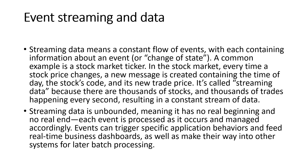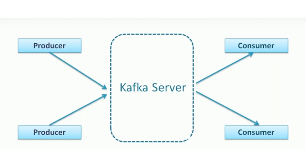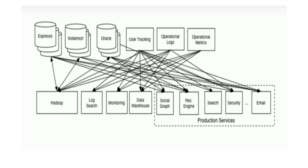Streaming data is unbounded, meaning it has no real beginning or real end. Each event is processed as it occurs and managed according to business requirements. In this diagram you can see a very simple example of a messaging server, where you have a producer and a consumer. In the middle you can call it a Kafka server or messaging server — the producer produces a message and the consumer is ready to listen to it.